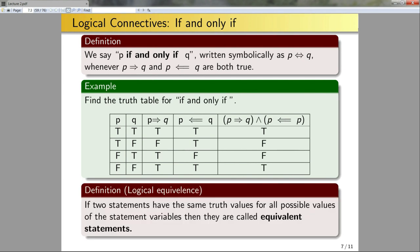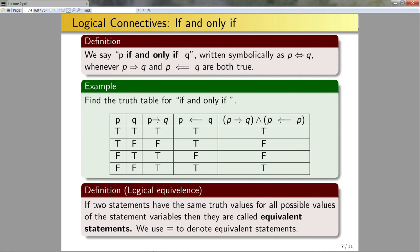Before going further, let me define logical equivalence. If two statements have the same truth values for all possible values of the statement variables, then they are called equivalent statements. If two statements are equivalent, you can say statement A if and only if statement B. We can use the triple equals sign (≡) to denote equivalent statements. The course notes use a double arrow; I prefer the triple equals, but both are valid notations.